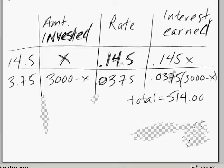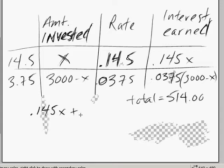Okay, so back to our regular scheduled notes. So what we need to do is get this equation going. And it's going to look something like this: 0.145x plus 0.0375 times 3,000 minus x equals 514.